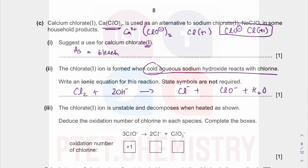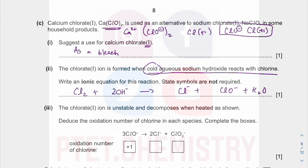All sodium salts are soluble in water, and sodium hydroxide is also soluble in water. This chlorate product is obtained when you have hot concentrated sodium hydroxide reacting with chlorine — hot meaning around 50 to 60 degrees Celsius. Here chlorine is −1 in NaCl, and in ClO3⁻ you have three oxygens each at −2, so overall the ion charge is −1, meaning chlorine is at +5.